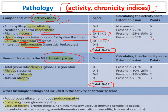The chronicity score includes: glomerular sclerosis, fibrous crescents, interstitial fibrosis, and tubular atrophy — each scored 0 to 3, with total from 0 to 12. These activity and chronicity scores are very important for management decisions: a patient with high activity index and low chronicity score can benefit from augmented immunosuppression.